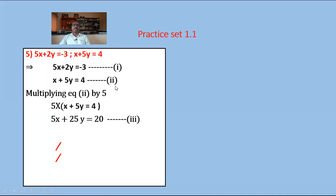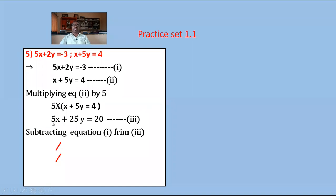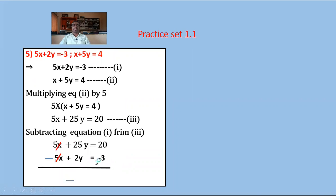From equations 1 and 3, the coefficient of x is plus 5 in both, so subtract equation 1 from equation 3. The signs of equation 1 change: minus 5x and minus 2y. Then plus 5x minus 5x gets 0. So 25y minus 2y equals 23y equals 20 plus 3 equals 23. Hence y equals 23 upon 23 equals 1.